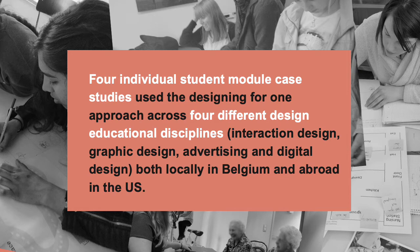In order to explore designing for one further, over the course of two years four individual student module case studies used the designing for one approach across four design educational disciplines: interaction design, graphic design, advertising, and digital design — both locally in Belgium and abroad in the US. Moving away from dementia as the primary context, the four cases ran across different coursework within bachelor degree, discipline-specific programs, and each explored a different topic. The first explored e-inclusion and marginalized communities.